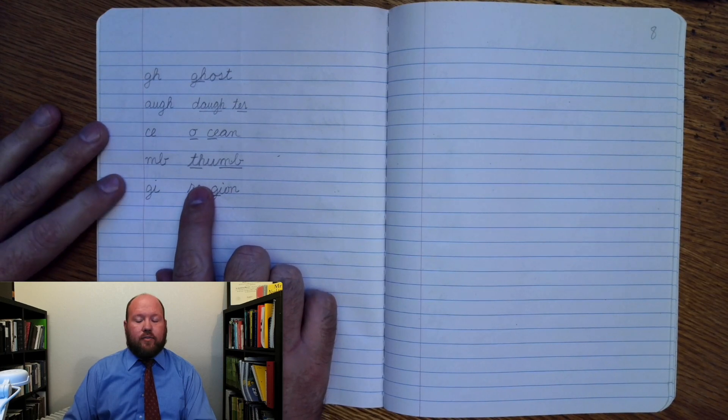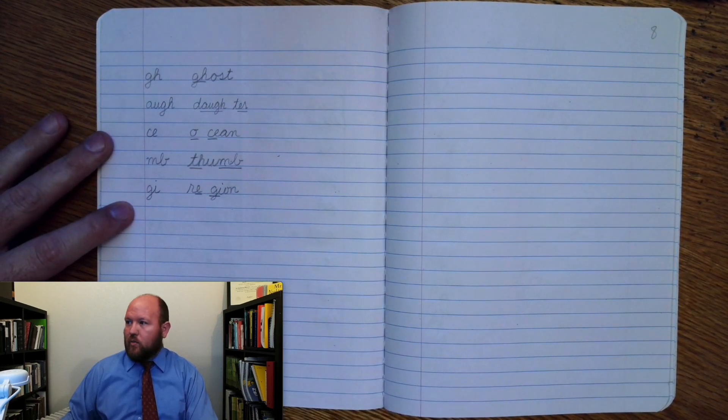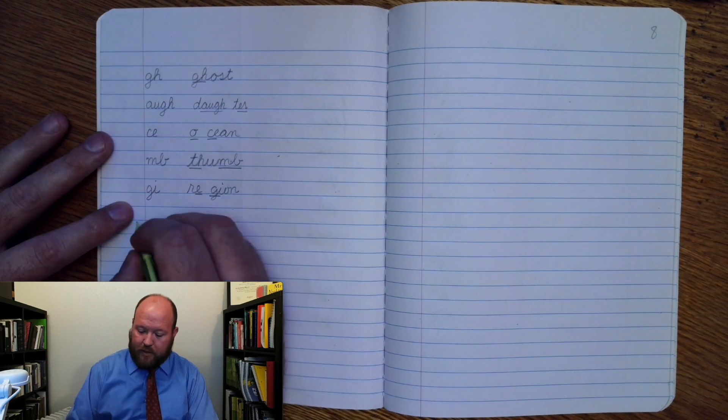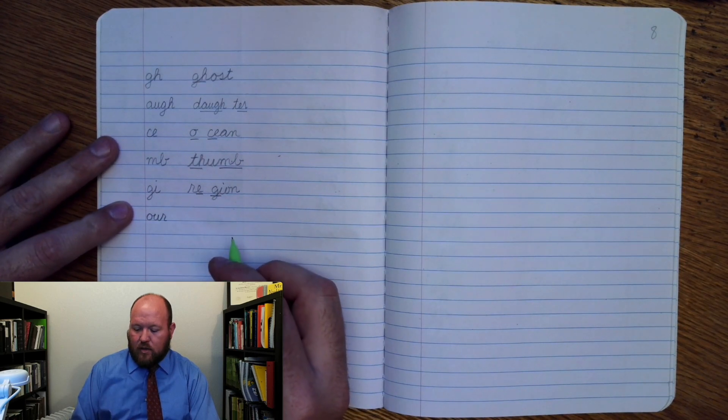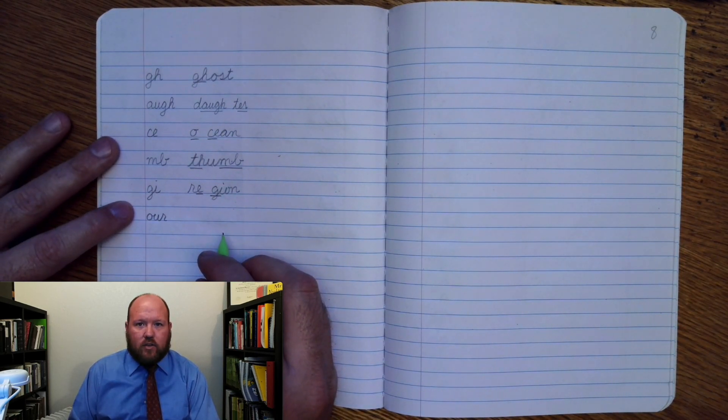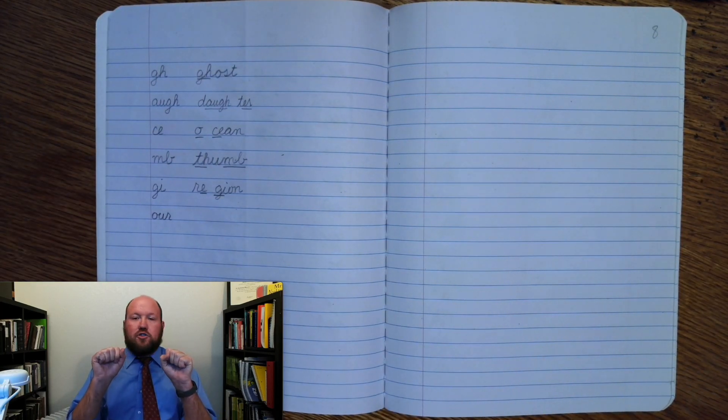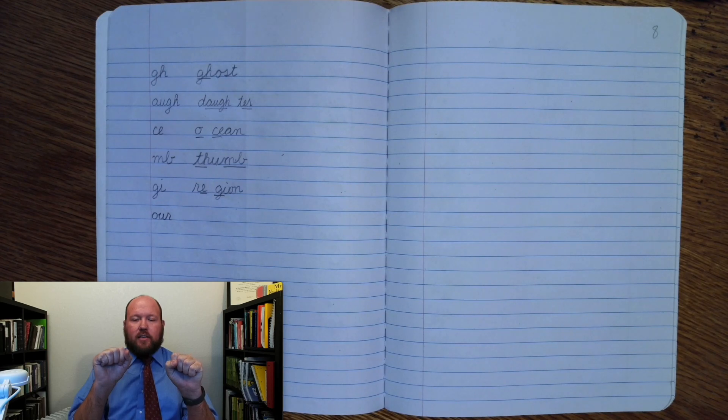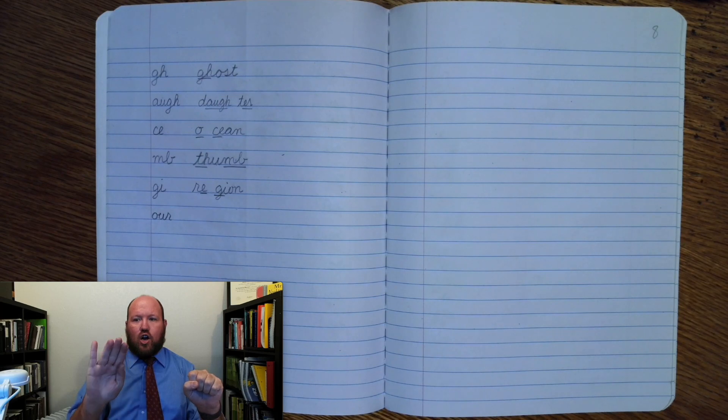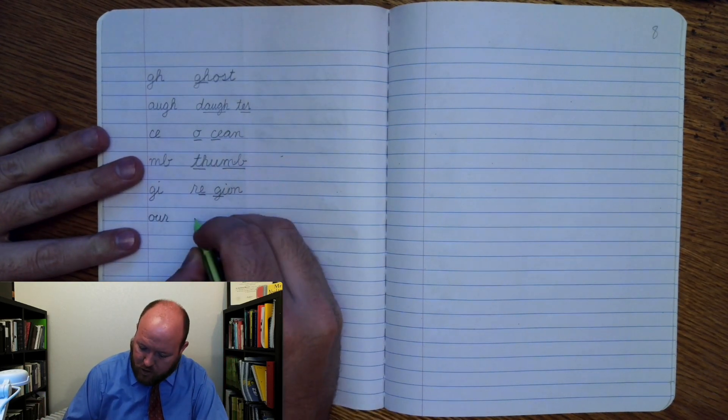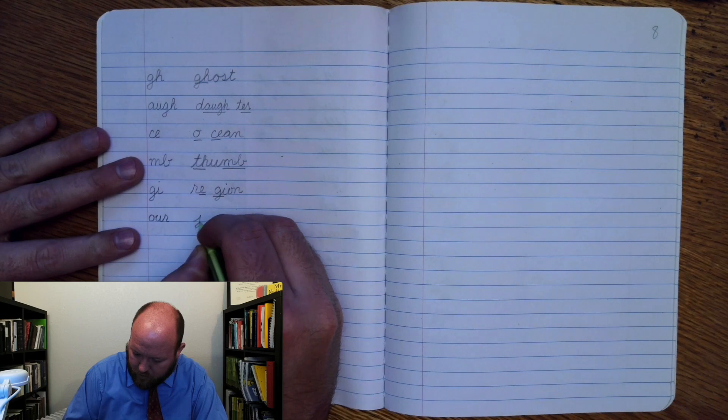We already have a number of phonograms that we've already done and we're going to do another one. And it is going to be the O-U-R phonogram, and this makes an 'er' sound like in the word journal. So we'll do journey. Base word journey. J-er, N-I. Here we're going to use an E-Y to make that 'I' sound. So write journey. J-er, our new phonogram, N-I.